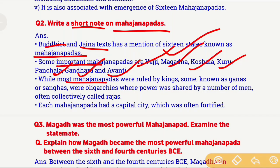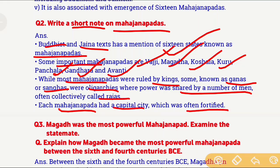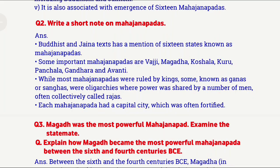Most Mahajanapadas were ruled by kings. But some Mahajanapadas were called Sanghas or Ganas, which showed oligarchic rule — meaning no single particular ruler governed, but rather a group of people or many men ruled collectively, and all those people together were called Rajas. However, most Mahajanapadas had one particular ruler — a king. Each Mahajanapada also had a capital city that was fortified, meaning it was surrounded by boundaries on all sides.